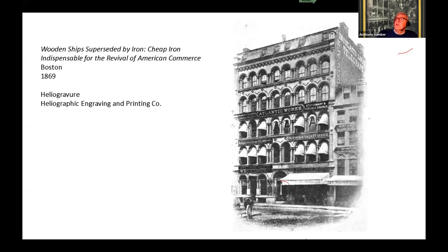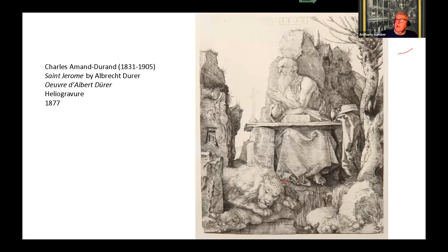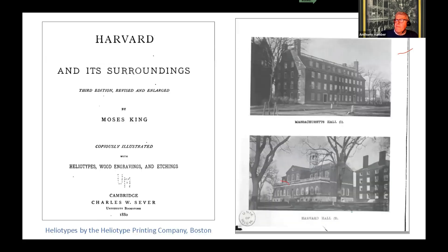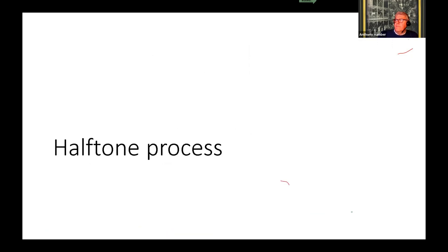Finally, heliogravure: this is an 1869 example from a publication called Wooden Ships. The heliogravure process also reproduced facsimiles of Old Master drawings — Armand Durand produced such high quality ones that there are some collections that still believe they have the original Albrecht Dürer, when they only have a copy by heliogravure. And again, very high quality — Palais du Louvre from a series 1869 to 1875 by Baldus. Another example from the Heliogravure Printing Company in Boston of Arden and its surroundings.